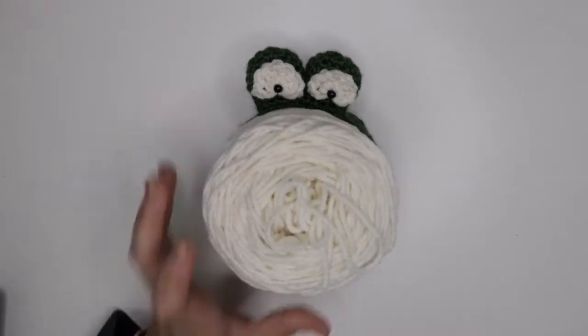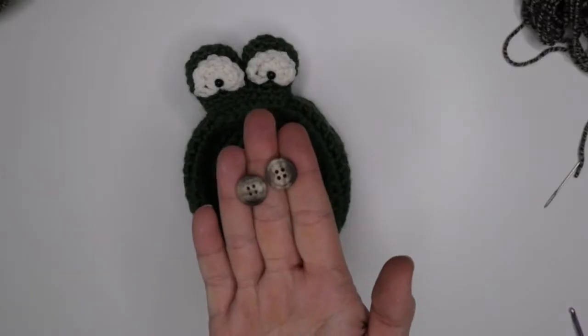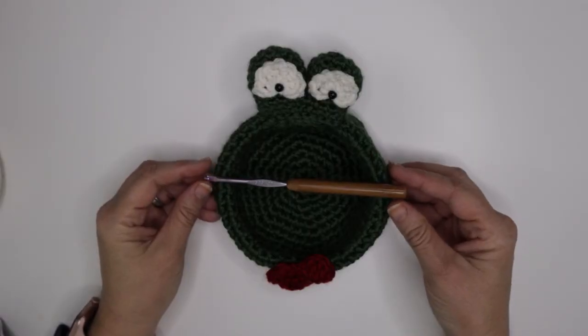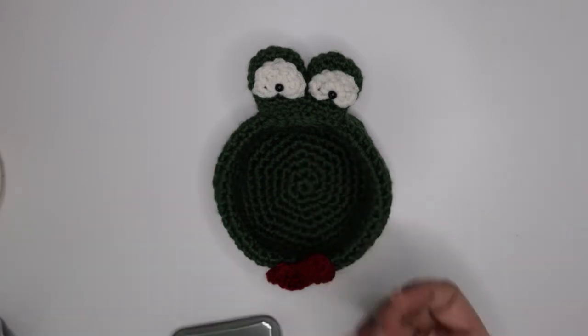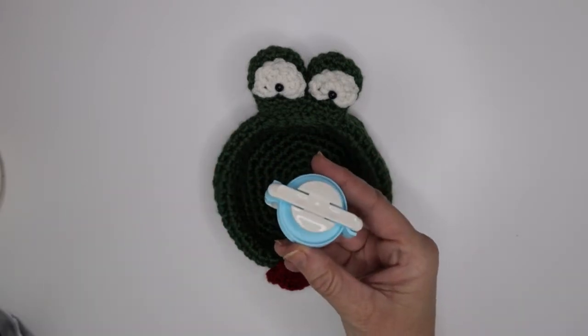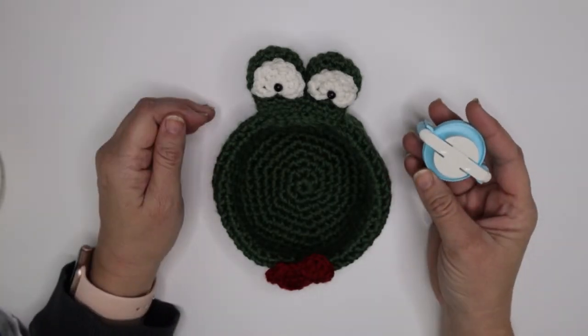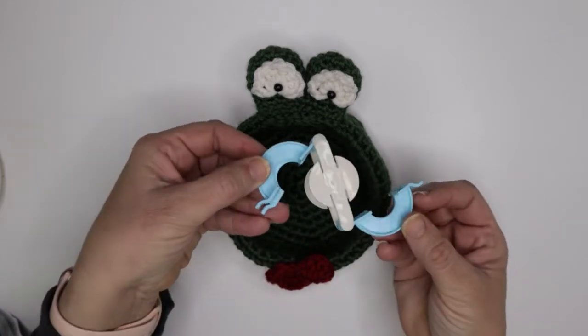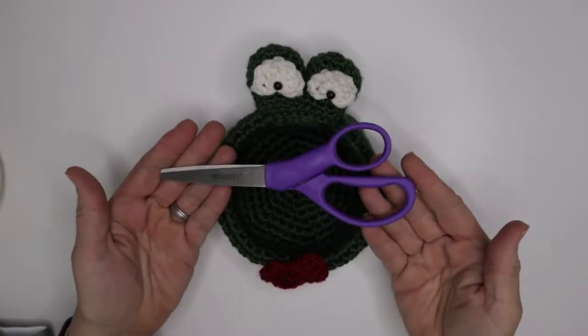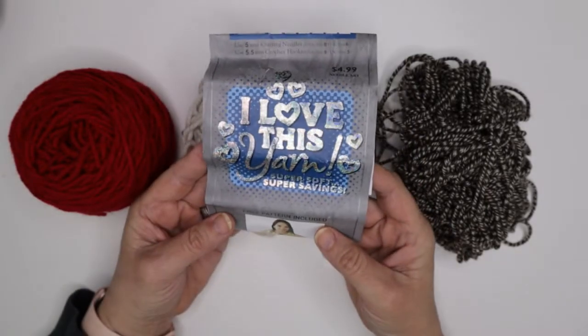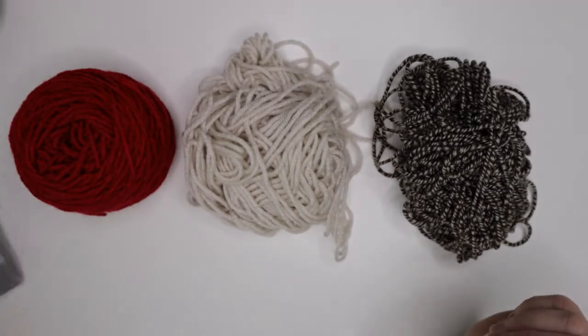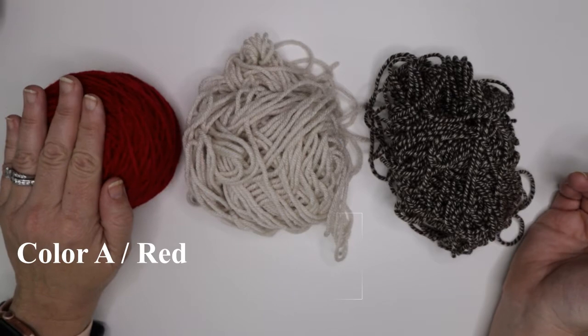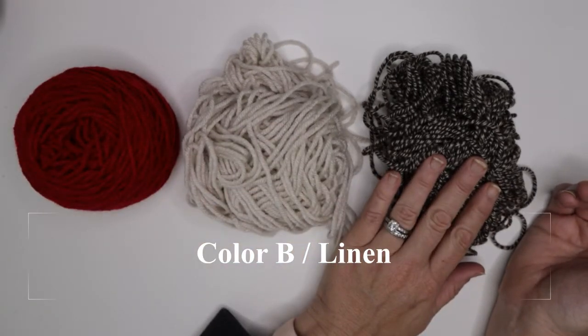To make the scarf you're going to need some waste yarn, two buttons, a needle and thread, an Addy Express, a size G crochet hook, a tapestry needle, a pom-pom maker or your preferred method of making a pom-pom. I like the way this turns out so I'm going to be using this. You'll need a pair of scissors. You will also need I Love This yarn. I like the classic sock monkey look so I've chosen red, linen, and marled mocha.